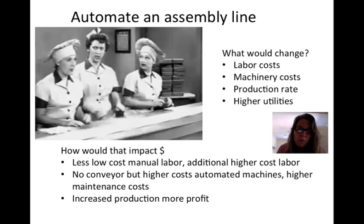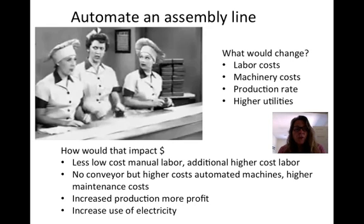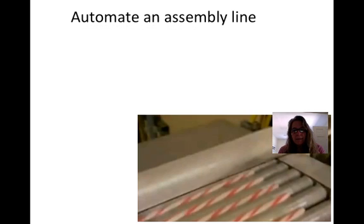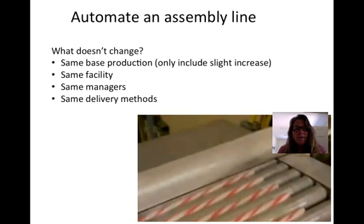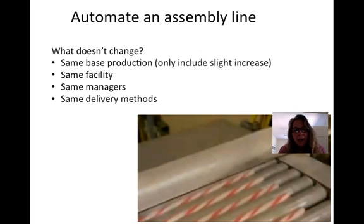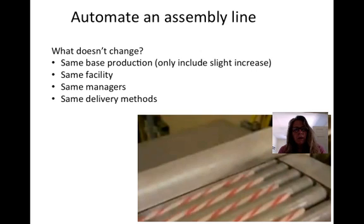You might have increased production, which could contribute to more profit because you'd be able to sell more items. You might have increased electricity use when you automate. All of these need to be completely spelled out. But what doesn't change? You might have the same base production, the same facilities — so you don't need to include rent — the same managers, and the same delivery methods. All of those can be excluded from the analysis because they're the same in both alternatives.